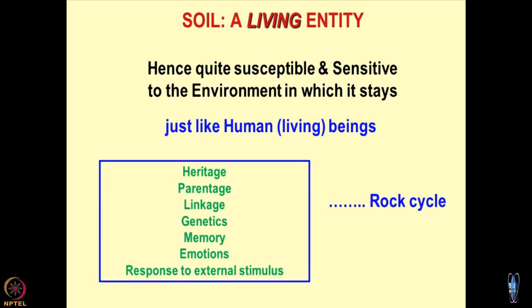Emotions — I say something harsh to you and you start crying: dissipation of emotions. Consolidation is a good example of this. At the same time, I say something very good, you feel elated, joyous, your face glows — emotions getting reflected on your face. Swelling and shrinking behaviour would be one of these. Responses to external stimulus is what we are trying to study — we are trying to create a matrix of all these traits which are similar to the human body.